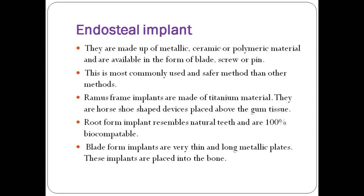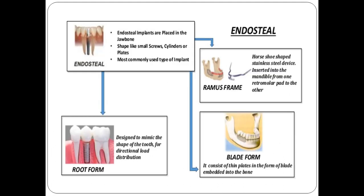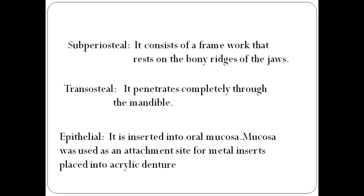Endosteal implants are most commonly used. They are made of metallic, ceramic, or polymeric material and are available in the form of blade, screw, or pin. This is the most commonly used and safest method. Subtypes include root form, ramus form, and blade form. Subperiosteal implants consist of a framework that rests on the bony ridge of the jaws. Transosteal implants penetrate completely through the mandible. Epithelial implants are inserted into the oral mucosa; the mucosa is used as an attachment site for metal inserts placed into acrylic dentures.